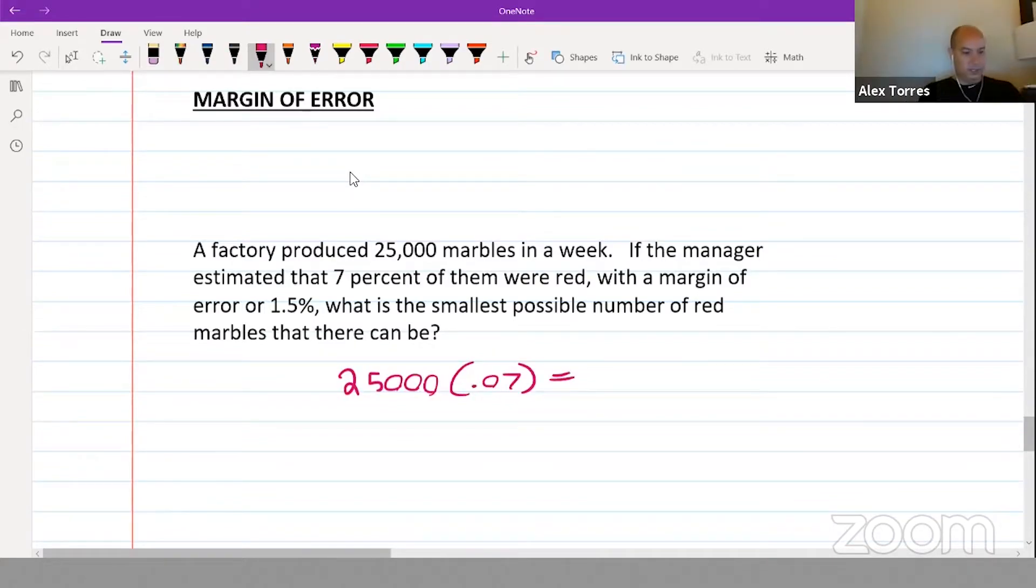Okay, now the margin of error is plus or minus 1.5%, so what if it were plus 1.5%? That would be 8.5% or 0.085. Or if it were minus 1.5%, it would be 5.5% or 0.055.